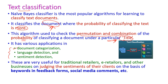Some of the applications of text classification are document categorization, language detection, and sentiment detection. These applications are very useful for traditional retailers, e-retailers, and other business people for judging the sentiment of their clients based on keywords in feedback forms, social media comments, and so on. For example, words like 'good', 'high', 'medium', or 'normal' help classify and understand the sentiment of clients.